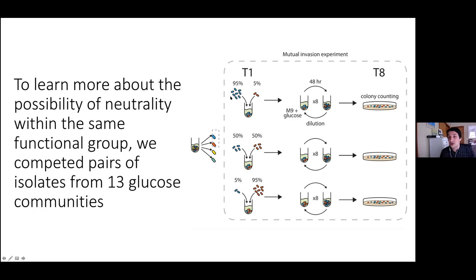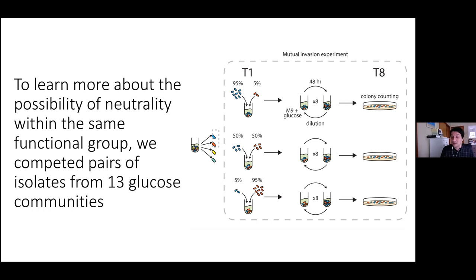Chang inoculated these communities on M9 plus glucose with 48-hour growth periods and the same exact dilution factor as before, propagating for eight transfers. He treats these reconstituted communities as if they were assembled from the parent community but propagates them in exactly the same ecological regime. He then uses colony counting — and more recently other methods in reasonable agreement — to measure frequencies of each species.